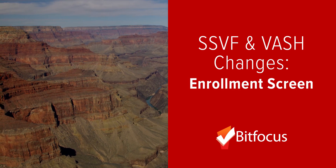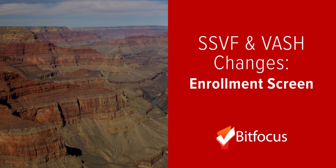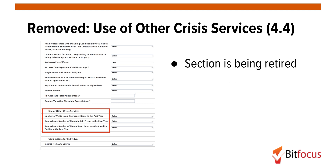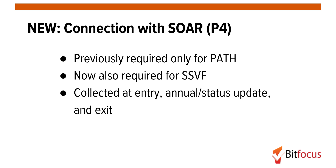Now let's review the SSVF and VASH standard enrollment screen changes. The VAMC station number field was previously a text field in which the user would manually type in the VAMC station number. With the 2017 data standards, VAMC station number has been changed to a pick list field, and existing text values will be mapped to the new pick list values. The use of other crisis services section has been removed. Connection with SOAR, previously only required for PATH projects, will now also be required for SSVF projects, collected at entry, annual/status update, and at exit.